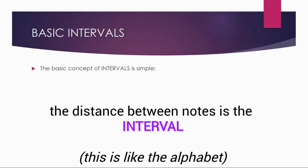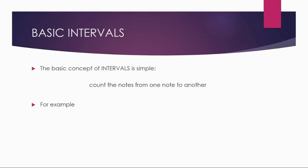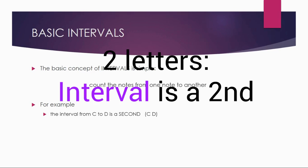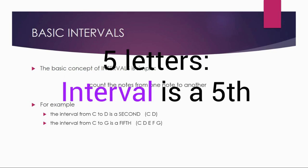Today we're talking about intervals, and the concept is very simple — you're just counting from one note to another. For example, the interval from C to D is a second: C, D — one, two — two notes, it's called a second. C to G is a fifth: C, D, E, F, G — one, two, three, four, five — five notes, called a fifth. A seventh would be from C to B: C, D, E, F, G, A, B — seven notes, it's called a seventh. It's not very complicated. It's math — you're just keeping it simple, just counting notes.